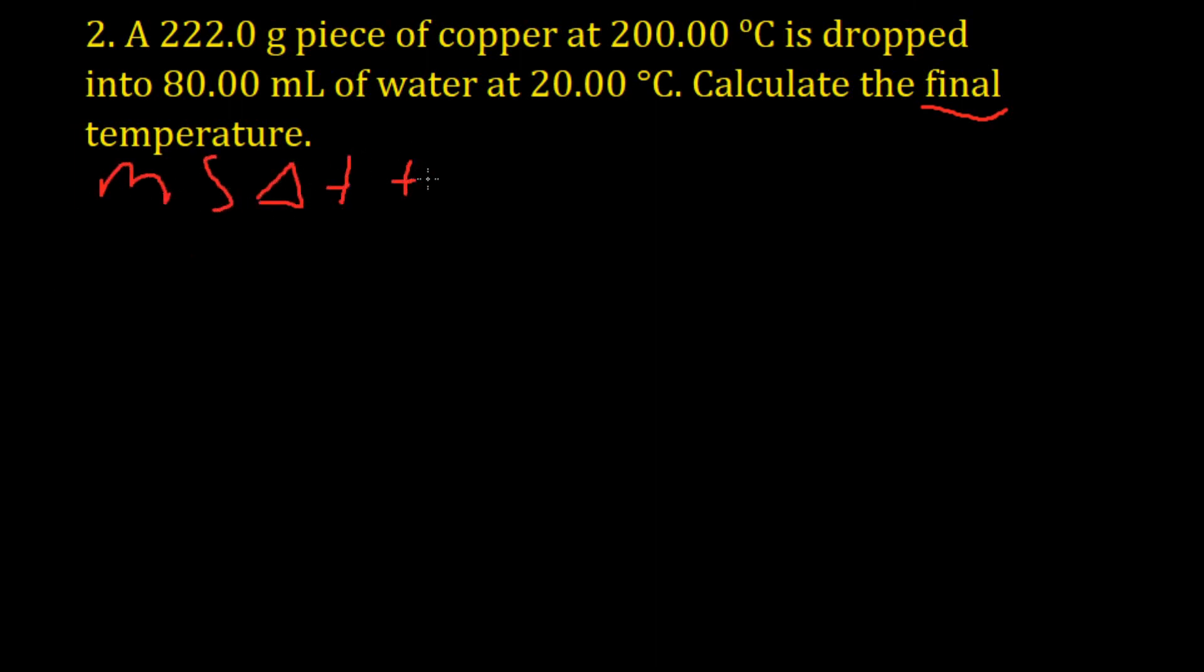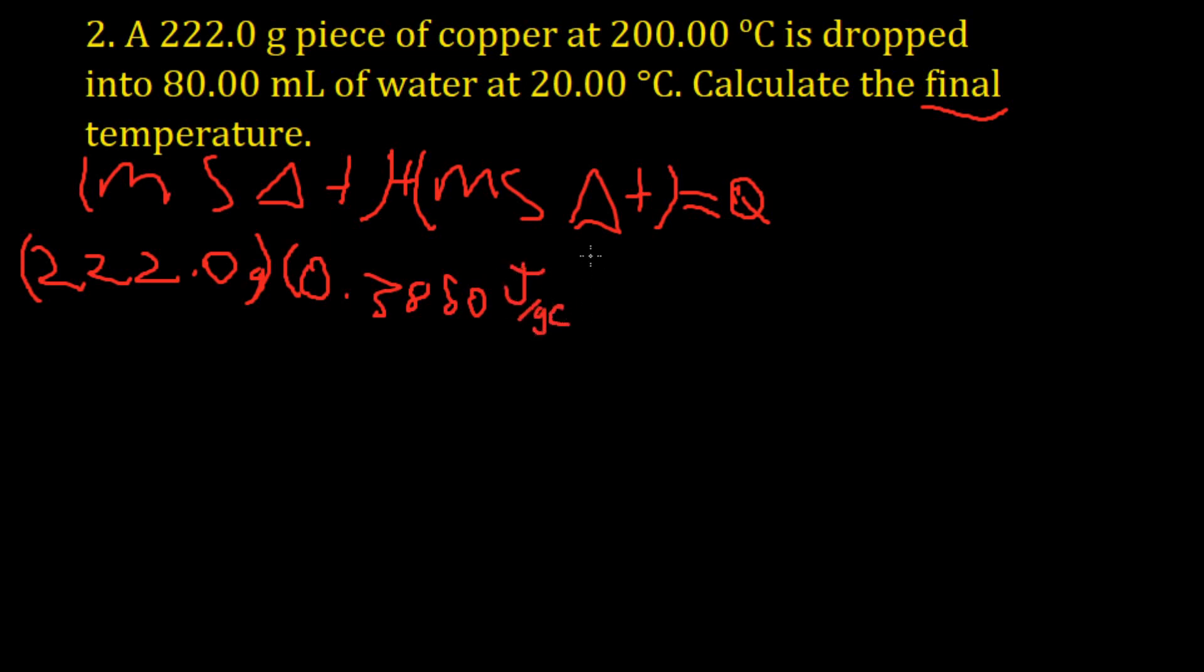So our problem will be set up the same, which will be ms delta t plus ms delta t equals zero. So let's set it up. First we will do the copper. The mass is 222 grams. The specific heat is 0.3850 joules over grams Celsius. And delta t is the final temperature, which was not provided to us, minus the initial temperature, which was 200.